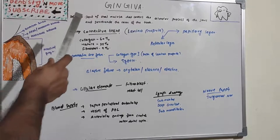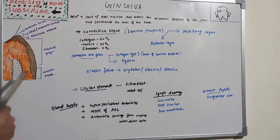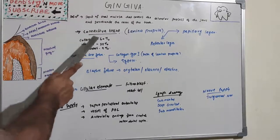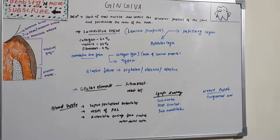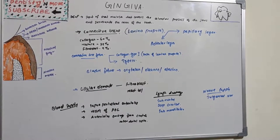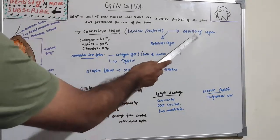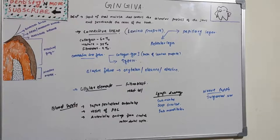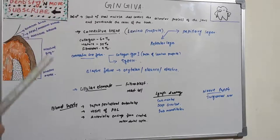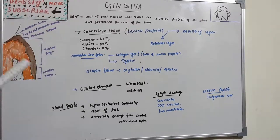Now let's move on to the connective tissue. The connective tissue of gingiva, known as lamina propria, is composed of approximately 60% collagen, 5% fibroblasts, and the remaining 35% includes matrix with vessels and nerves. It has two parts: papillary layer, which is adjacent to the epithelium and consists of papillary projections between the epithelial rete pegs, and the reticular layer, which is continuous with the periosteum of alveolar bone.